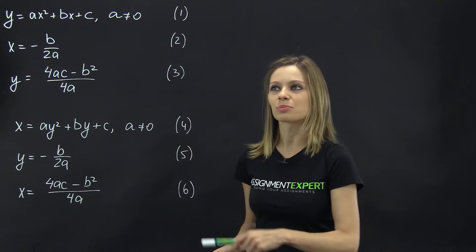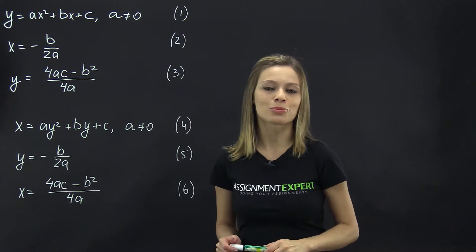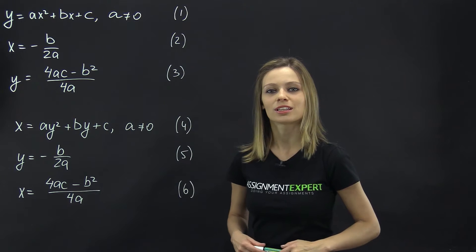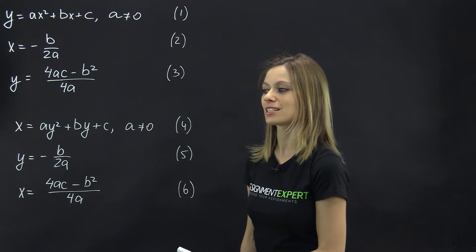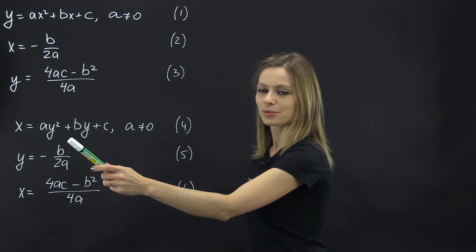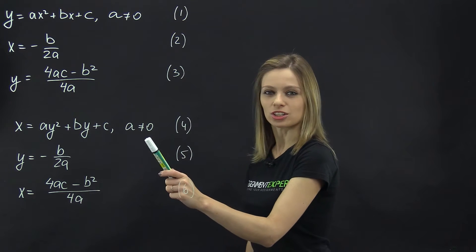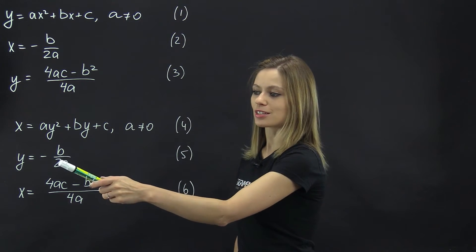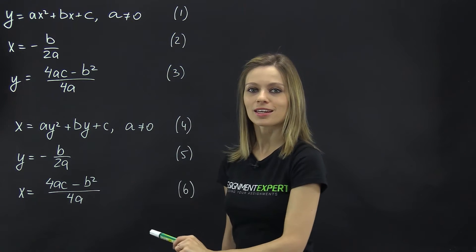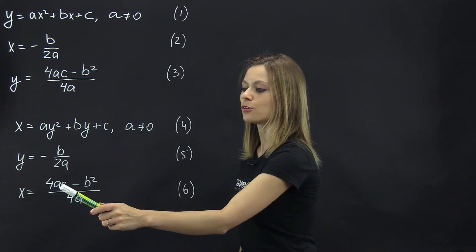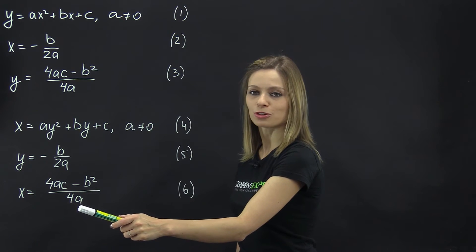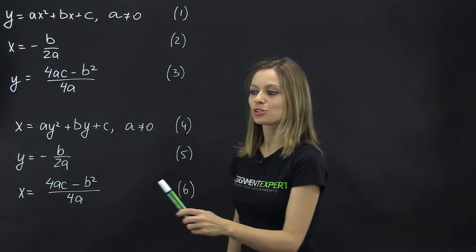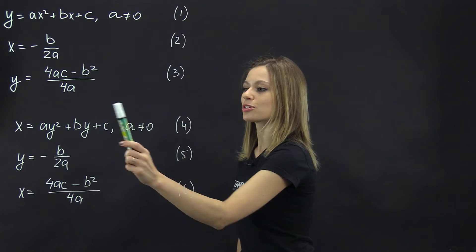Similarly, the vertex formula can also be used for calculating the coordinates of the vertex of the parabola given by the equation x equals ay squared plus by plus c, where a is not equal to zero. In that case, the y coordinate of its vertex is equal to negative b over 2a, and its x coordinate is equal to 4ac minus b squared over 4a, or it can also be found by substituting the y coordinate into the equation of the parabola.